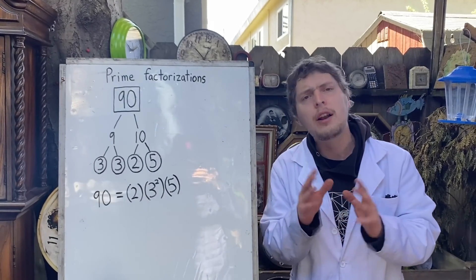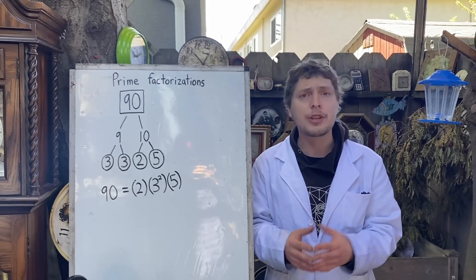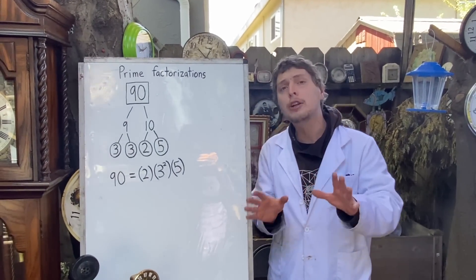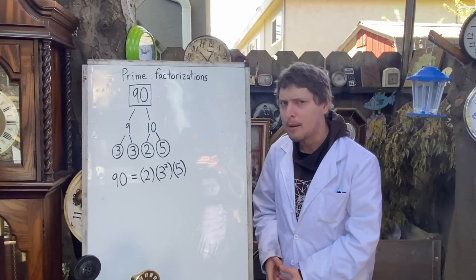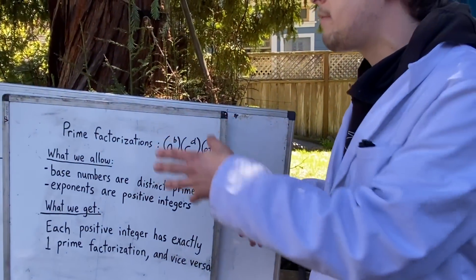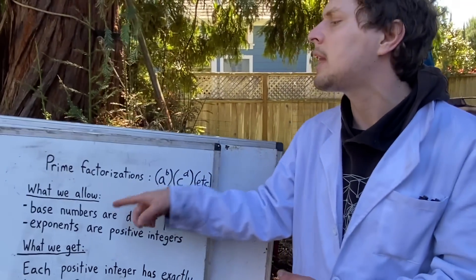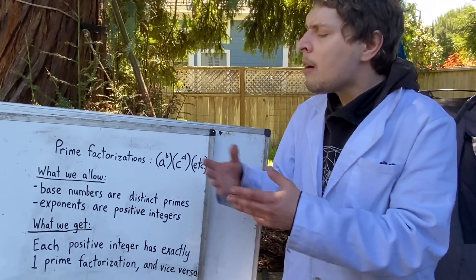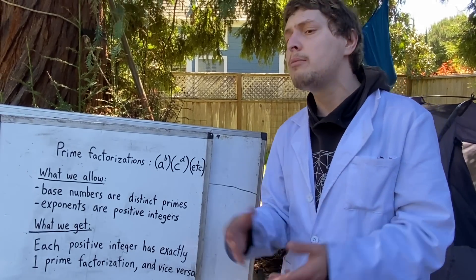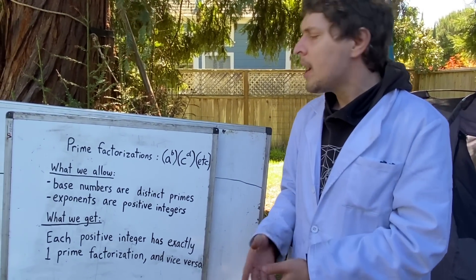But many of you may not know that there are some extensions we can make to the system of prime factorizations that will let them describe much more than just whole numbers. Whenever you make a change or an extension to a current system that's currently working pretty well, you'll want to keep in mind not just what rules you were previously following or what you were allowing in the system normally, but also what you were getting from the system. Like what benefits it might have that you may not want to lose when you make any changes.